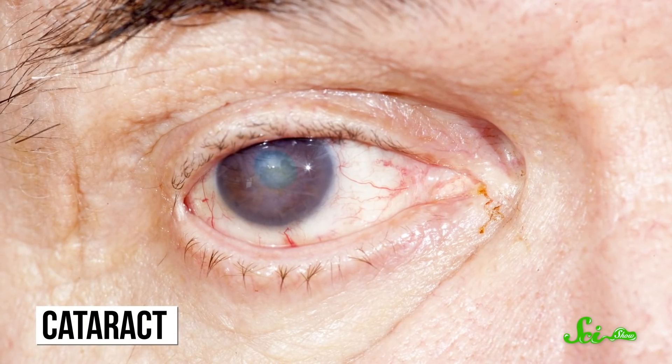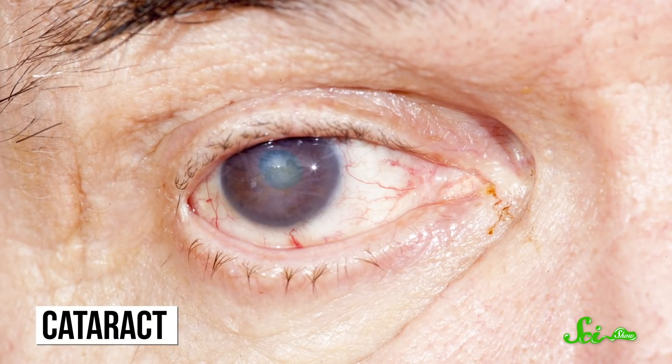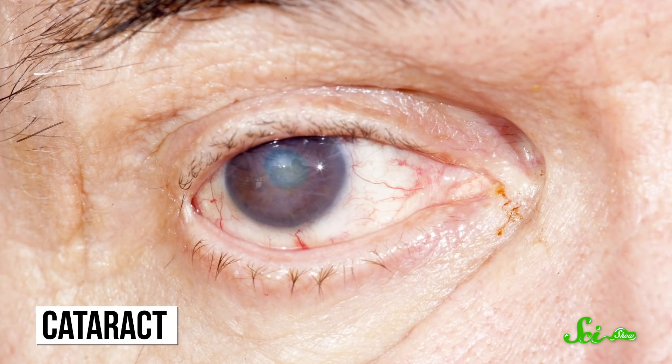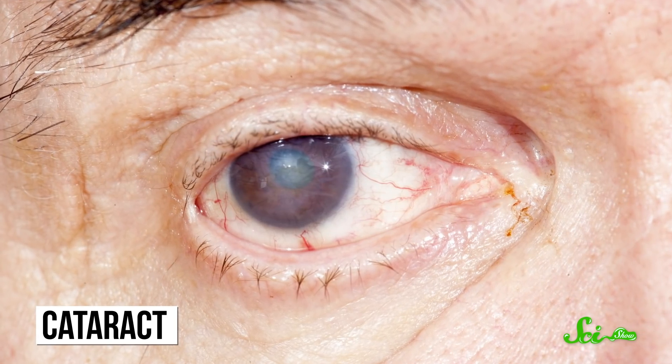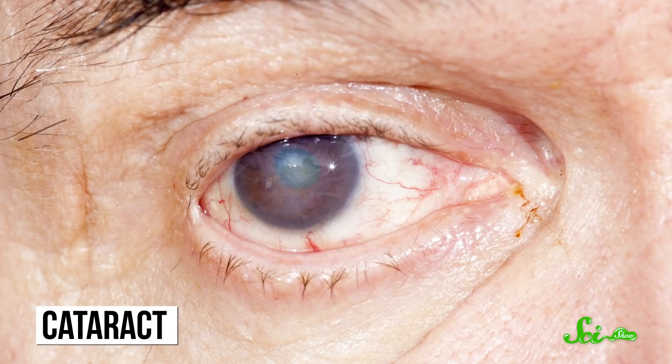But this wasn't the end-all solution for blurry vision, especially because, no matter how well you can shape the cornea, that doesn't help if the lens beneath it is cloudy. As we age, proteins in the lens of our eyes naturally start to clump up and create cataracts, which cloud the lens. They're entirely normal, but they can make it hard to see and cause blindness if they go untreated.